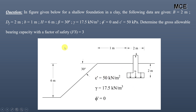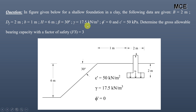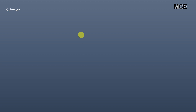The first case is for pure cohesive soil. The question states: for a shallow foundation on clay, the following data are given — width of footing: 2 m, depth of footing: 2 m, distance of footing edge from the top of slope: 1 m, height of slope: 6 m, angle of slope: 30°, unit weight of soil: 17.5 kN/m³, friction angle: 0° (pure cohesive soil), effective cohesion: 50 kPa. We have to find the gross allowable bearing capacity with a factor of safety equal to 3.